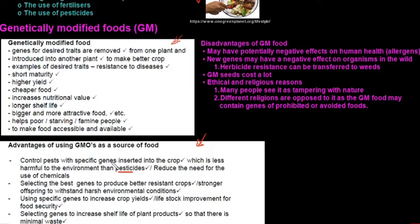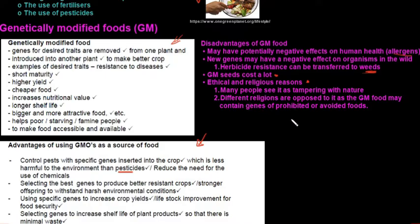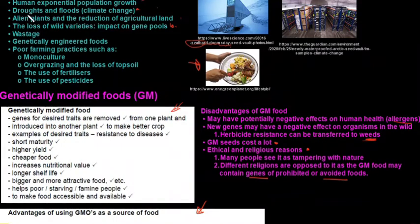Disadvantages of genetically modified food include potentially negative effects on human health, such as new allergies. New genes may have negative effects on organisms in the wild — for example, herbicide resistance can be transferred to weeds. GMOs cost a lot to produce. Importantly, there are ethical and religious concerns, as many see it as tampering with nature, and GMO food may contain genes from prohibited or avoided foods.